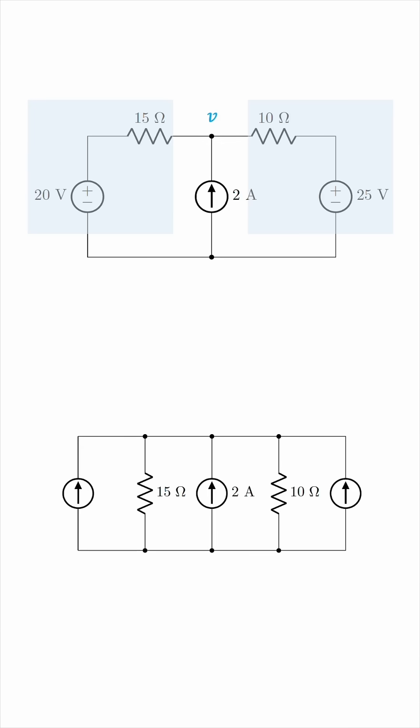To find the current sources, we'll use Ohm's law. For this source, we'll have 20 volts over 15 ohms, which is 4 over 3 amperes. The other current source will be 25 volts over 10 ohms, which is 5 over 2 amperes.